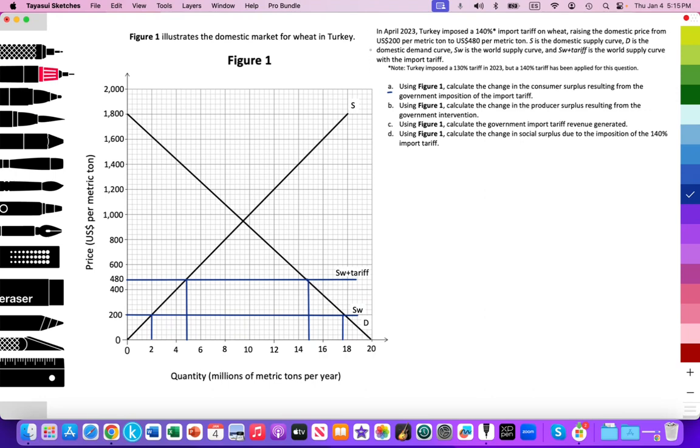Let's look at the information providing context for this model. I would be in the habit on an exam to highlight key points, so we're going to do that. In April 2023, Turkey imposed a 140% import tariff on wheat, raising the domestic price from $200 per metric ton to $480, which we notice here. That has increased domestic production along the x-axis but also reduced domestic consumption.